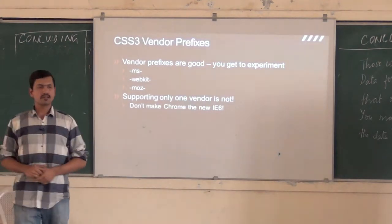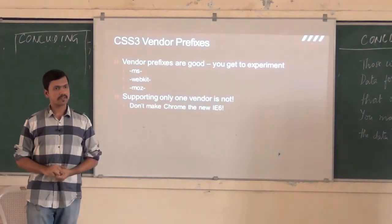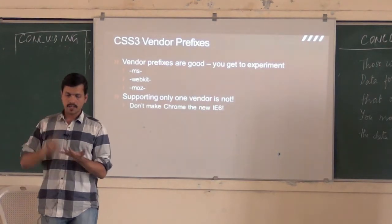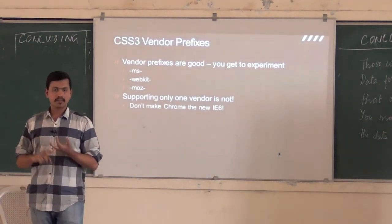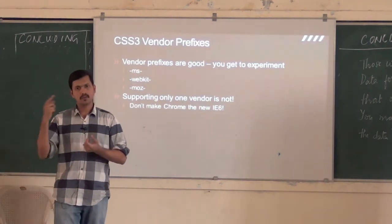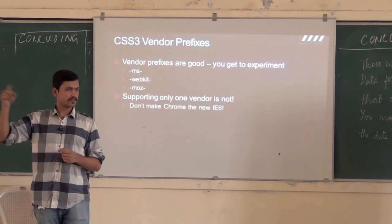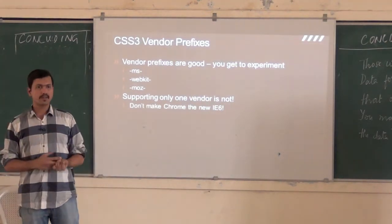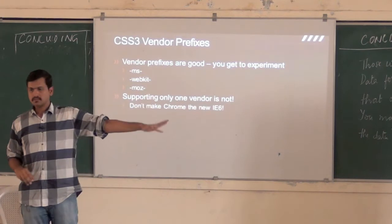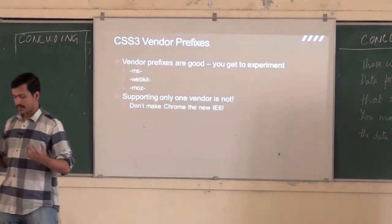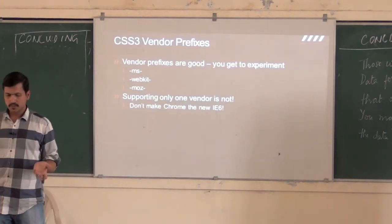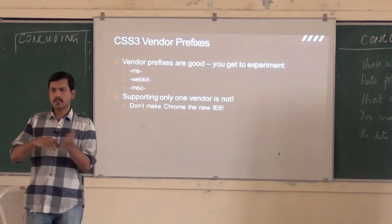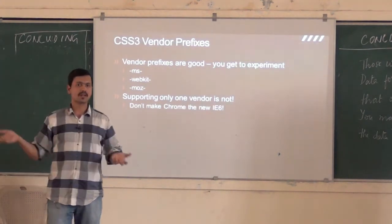So the appeal is: make sure you put all browser vendor prefixes. If you're using CSS3 transitions, put -ms-, -webkit-, -moz-, -o- — dash-o is for Opera, -webkit- is for Safari and Chrome. Make sure you put for all browsers. Otherwise, the browser you choose to support becomes a pseudo standard.